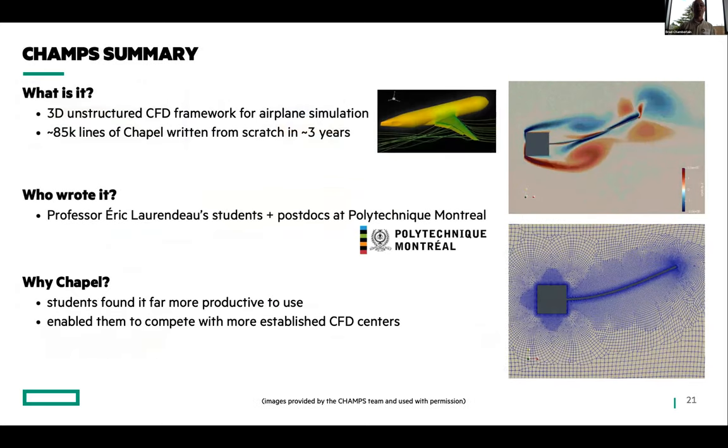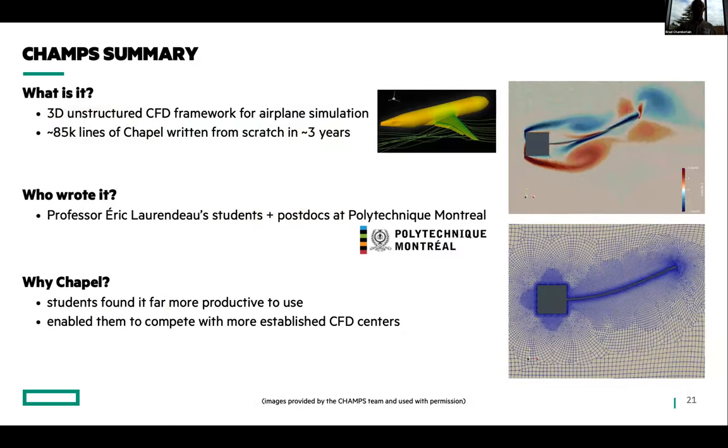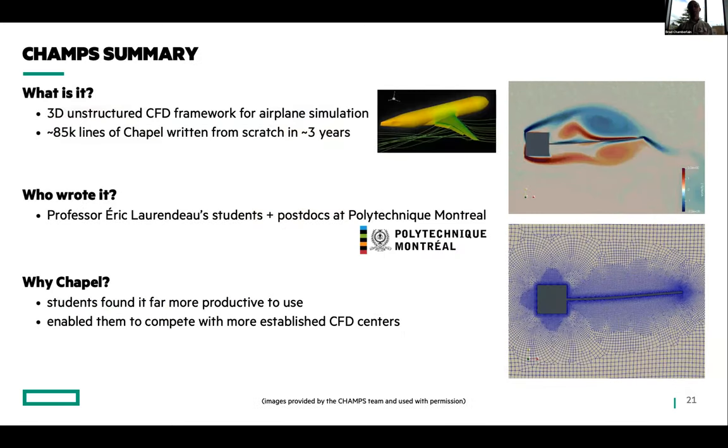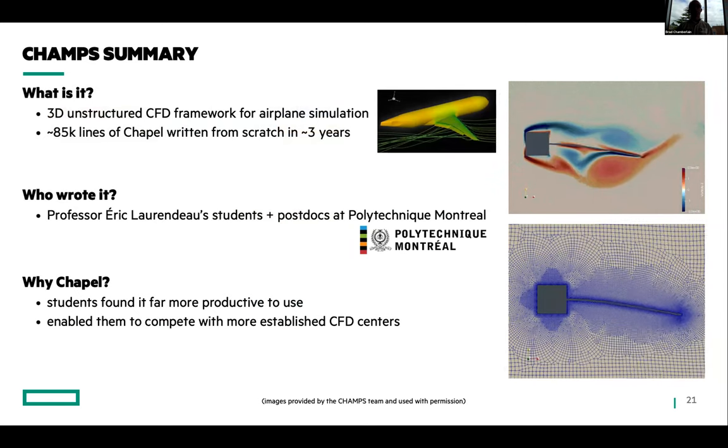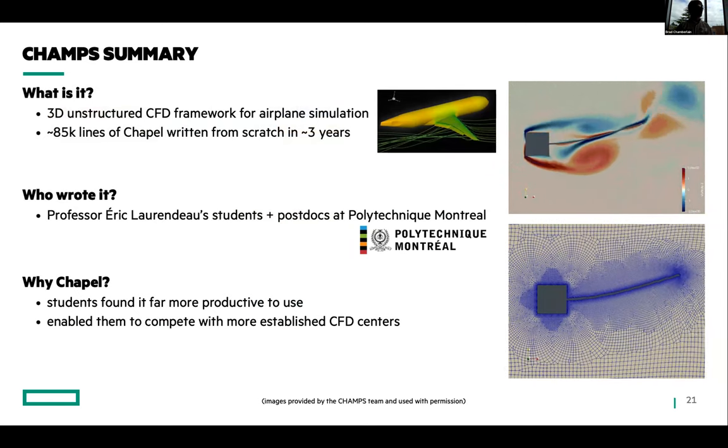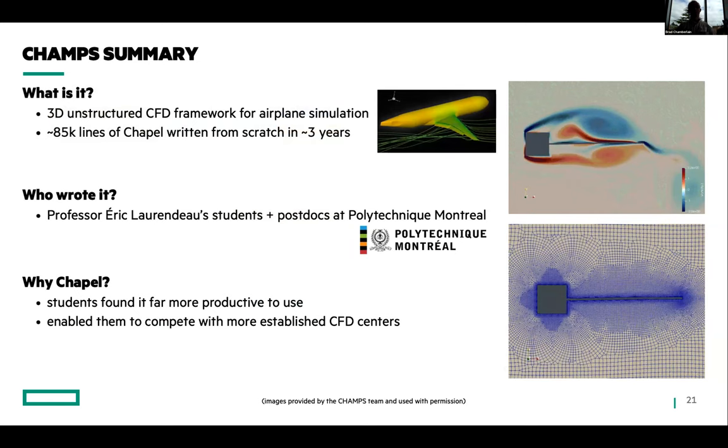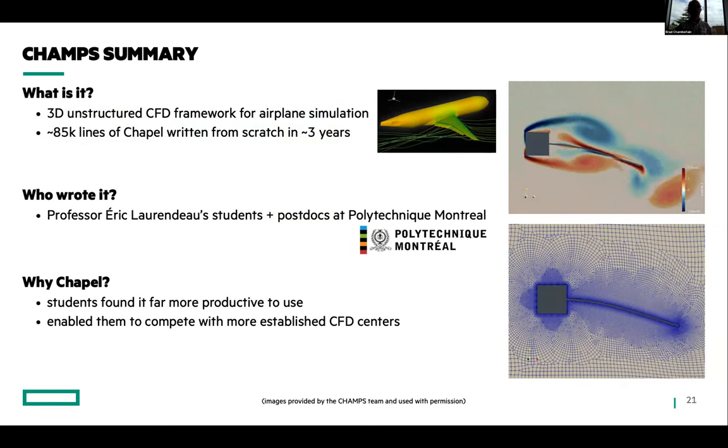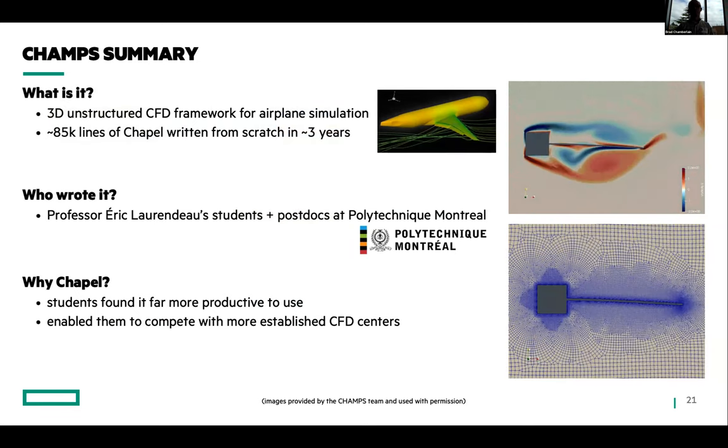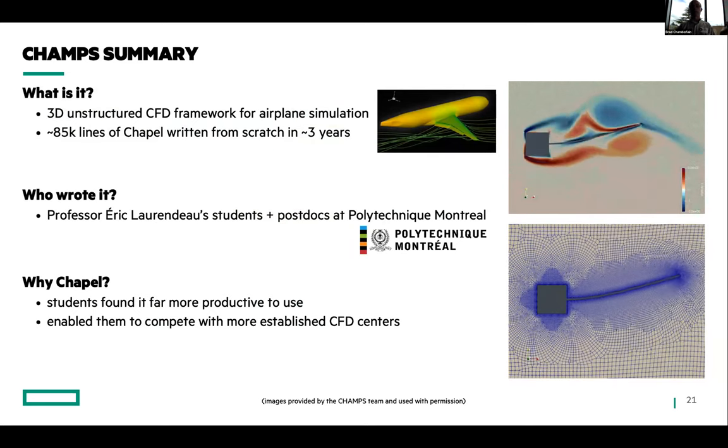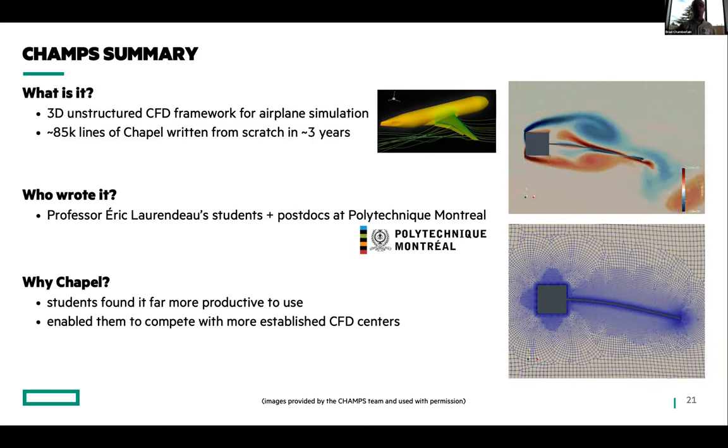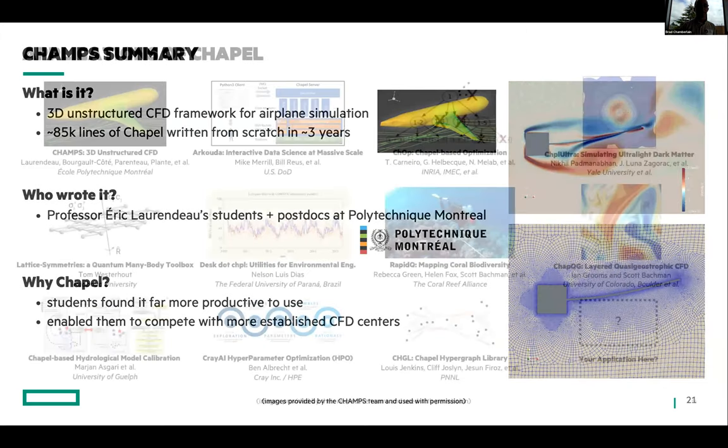This first one is kind of a traditional HPC computation doing computational fluid dynamics on 3D structures. This was developed at Polytechnique Montreal. And I'll say that the students have found this—they basically dragged a professor kicking and screaming to Chapel because they found it so much more productive to use. Their professor has basically come around because you can now have master students do a project that used to take two years. They can do it in three months with Chapel. And he's delighted about that.